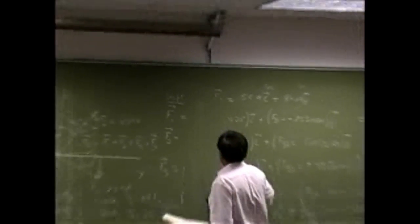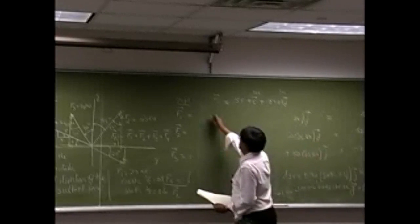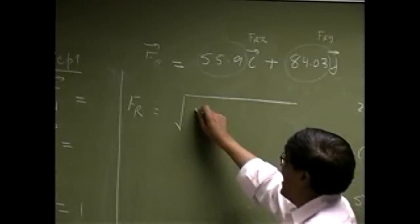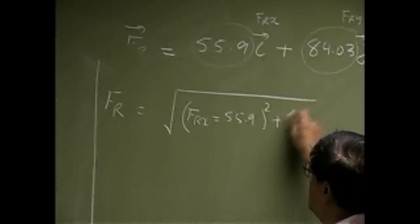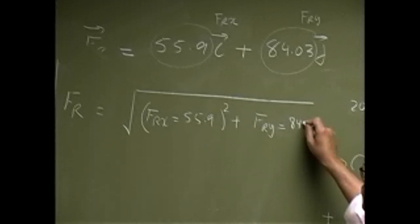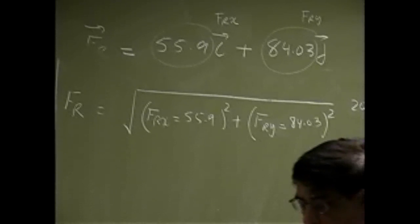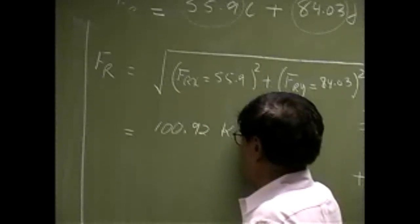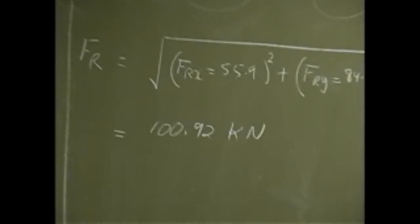Where the first number — 55.9 — is the X component of the resultant, and the second number — 84.03 — is the Y component of the resultant. Then we need to find the magnitude. To find the magnitude we go square root of FRx squared plus FRy squared: square root of 55.9 squared plus 84.03 squared. This number comes out to be 100.92 newtons. That gives us the magnitude we are looking for.